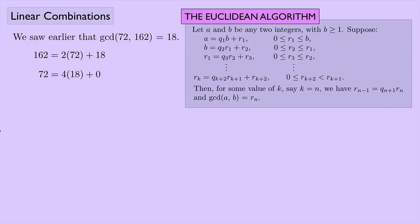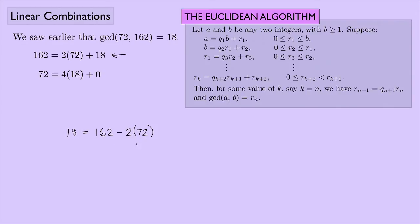Something else I want to show is a way of rewriting the greatest common divisor in terms of the two numbers given to us. Looking at that equation, I can solve for 18: it equals 162 minus 2 times 72. This is a linear combination — taking 1 of 162 and subtracting 2 of 72.